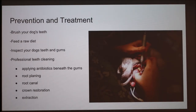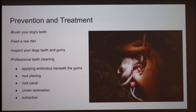For prevention and treatment, you can brush your dog's teeth using dog-specific toothpaste — not human toothpaste. Feeding a raw diet can help, as the natural flora in it can break down plaque around the dog's teeth. A good rule of thumb is to regularly inspect your dog's teeth and gums, as this disease is pretty noticeable. Professional teeth cleaning at a veterinarian is also an option, where they can apply antibiotics, perform root planing, root canal treatment, or extract teeth as needed.